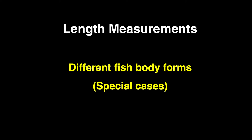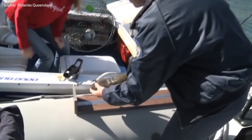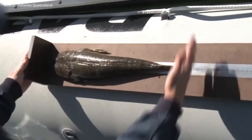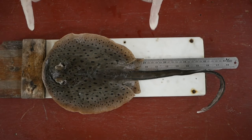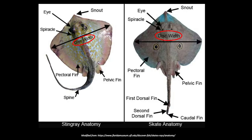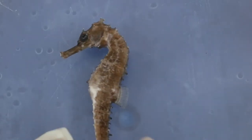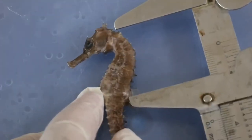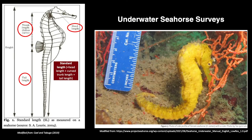In this section, we will discuss other special cases to consider when conducting length measurements. When dealing with rays and other dorsoventrally flattened fishes, samples should be measured while lying straight on their ventral surfaces. For rays, disc length is used, which is measured from the tip of the snout to the posterior edge of the pelvic fins. Sometimes, disc width rather than the overall length is recorded as the linear dimension. In the case of seahorses, their standard length is obtained by adding the measurements of the head length, trunk length, and tail length. Measurement is typically done with a ruler in underwater surveys, and the seahorses are aided by divers to deploy their tails to the full extent.